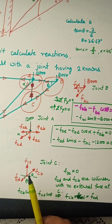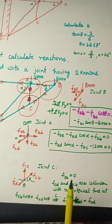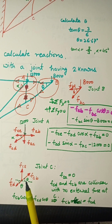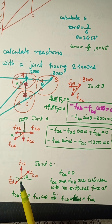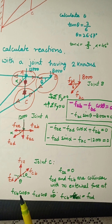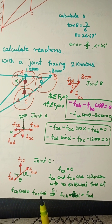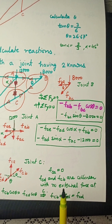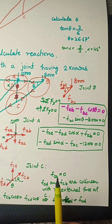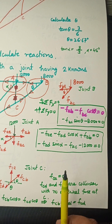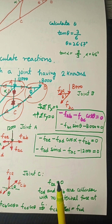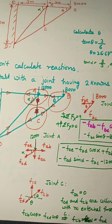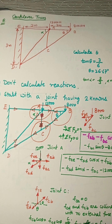At joint C, two are collinear and the third is meeting. FAC is zero. Since this angle is theta and the opposing angle is also theta, FCB·cos(theta) = FCD·cos(theta), meaning FCD = FCB. So FCA = 0 and you can determine the remaining forces from here.